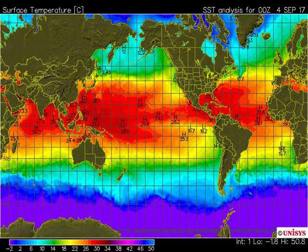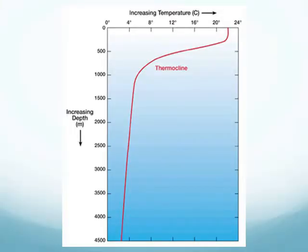Temperature also changes with depth. At the surface, temperatures typically range from 20°C up to 30°C. There's a section called the thermocline — the area where you have the greatest temperature change — which is generally between 200 and 1,000 meters. Below 1,000 meters it pretty much flattens out, and temperatures average about 4°C all the way to the bottom of the ocean.